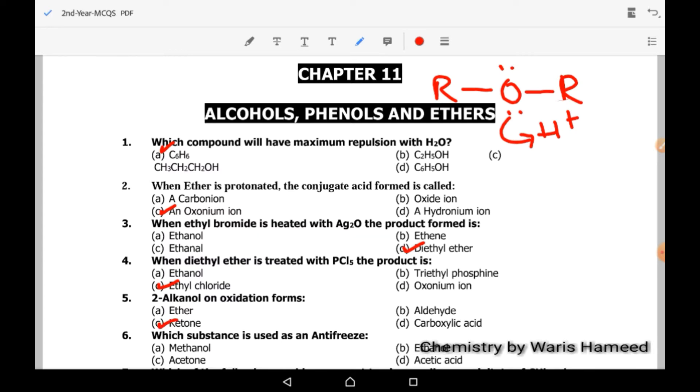Which substance is used as an antifreeze? Methanol is the compound among these compounds which can be used as an antifreeze. So option A is correct.